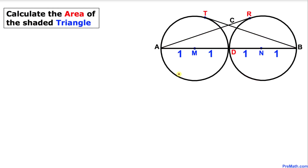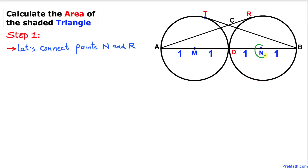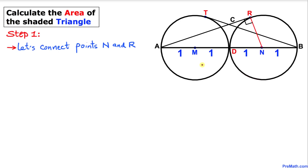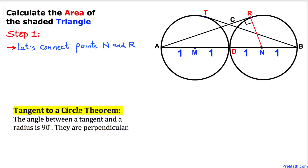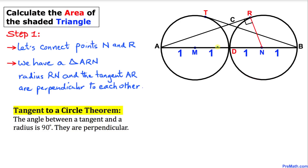Let's get started with the solution. We are going to connect the center N of this circle and this point of tangency. Let's connect points R and N. Now let's recall the tangent to a circle theorem: the angle between a tangent and a radius is always 90 degrees — they are perpendicular. Therefore, in triangle ARN, the radius RN and tangent AR are perpendicular, making a 90-degree angle.